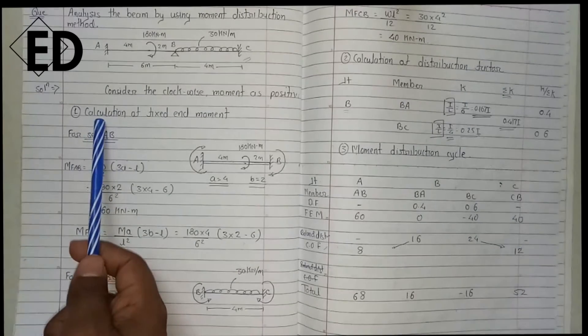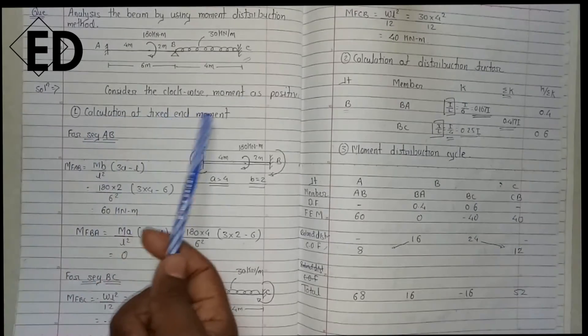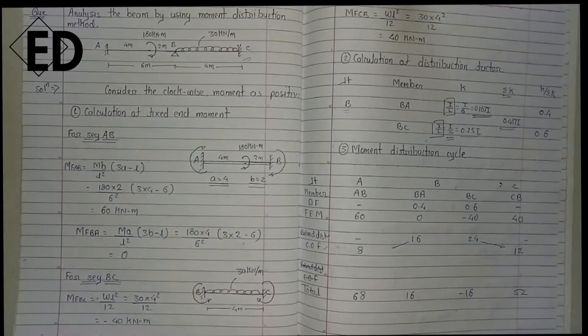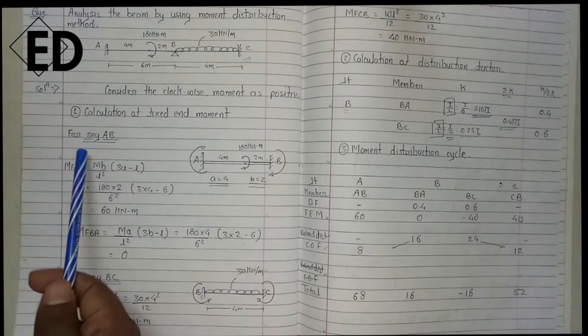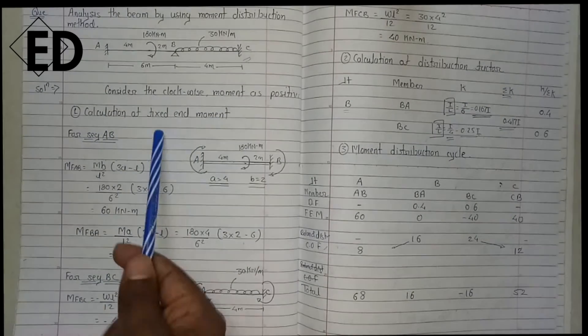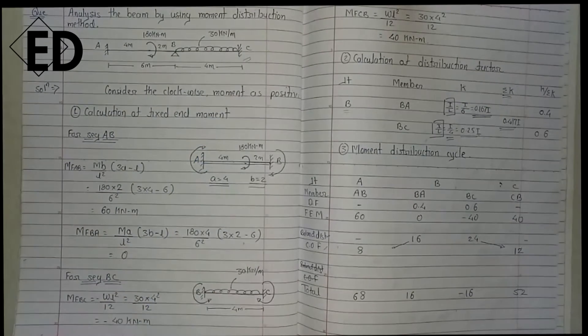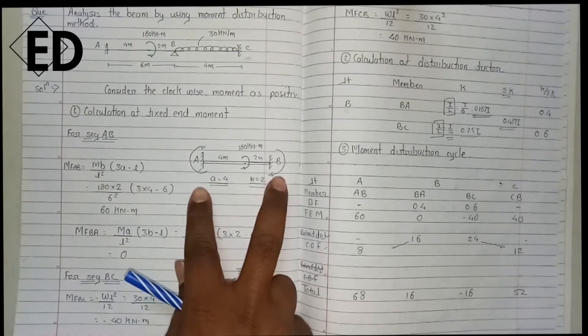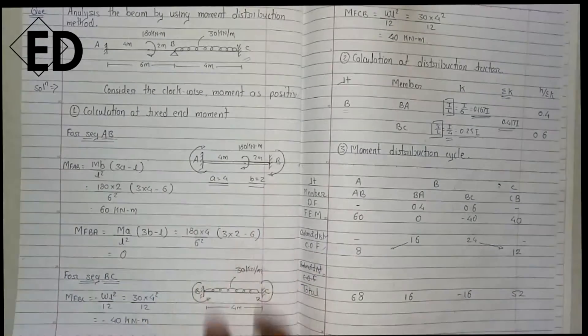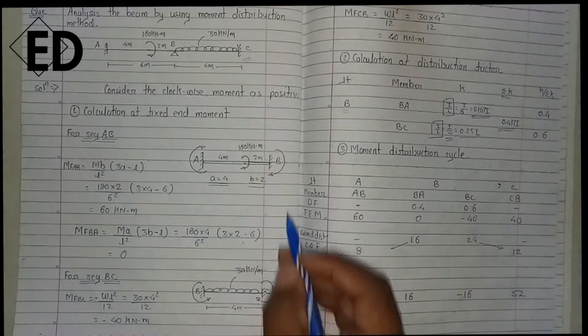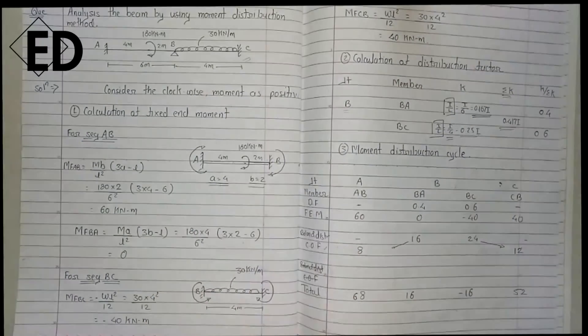In the first step we are calculating the fixed end moment. The name itself suggests that fixed end moment means the ends are fixed and we have to calculate the moment at the end.